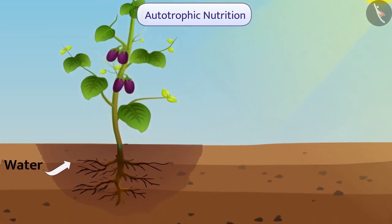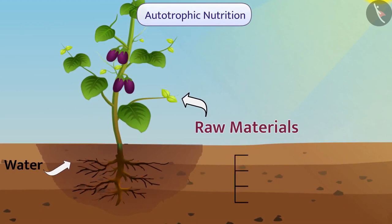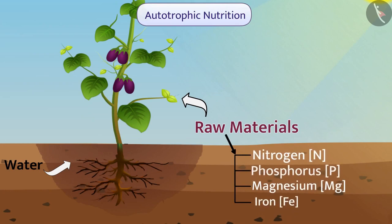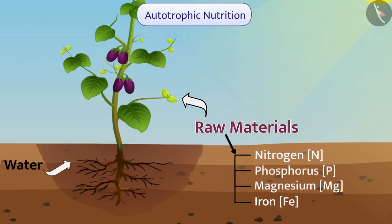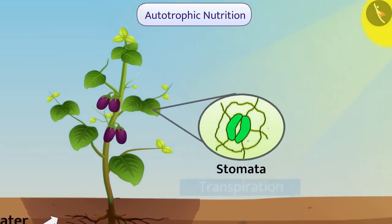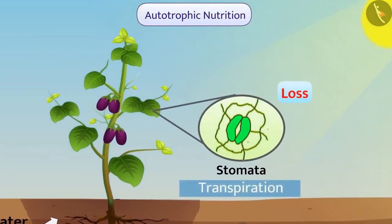Along with energy, autotrophic organisms also need some other raw materials to maintain their body, such as nitrogen, phosphorus, magnesium, iron and other substances which are obtained from soil. Pores of stomata cause a significant amount of water to be lost in the form of water vapor.